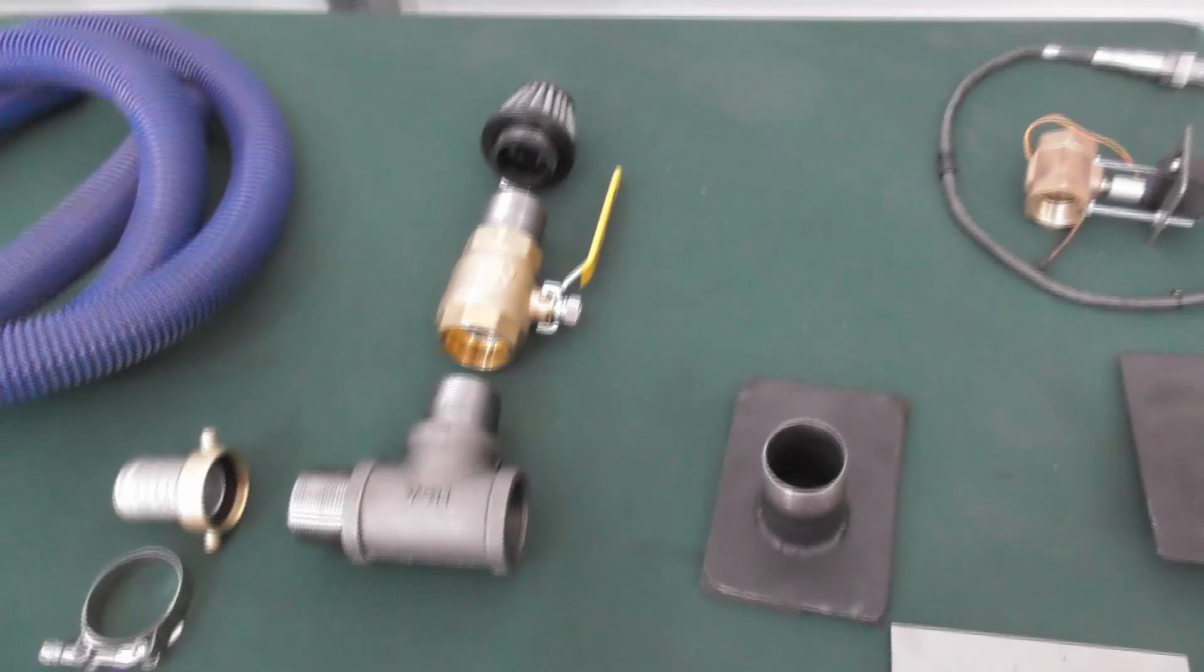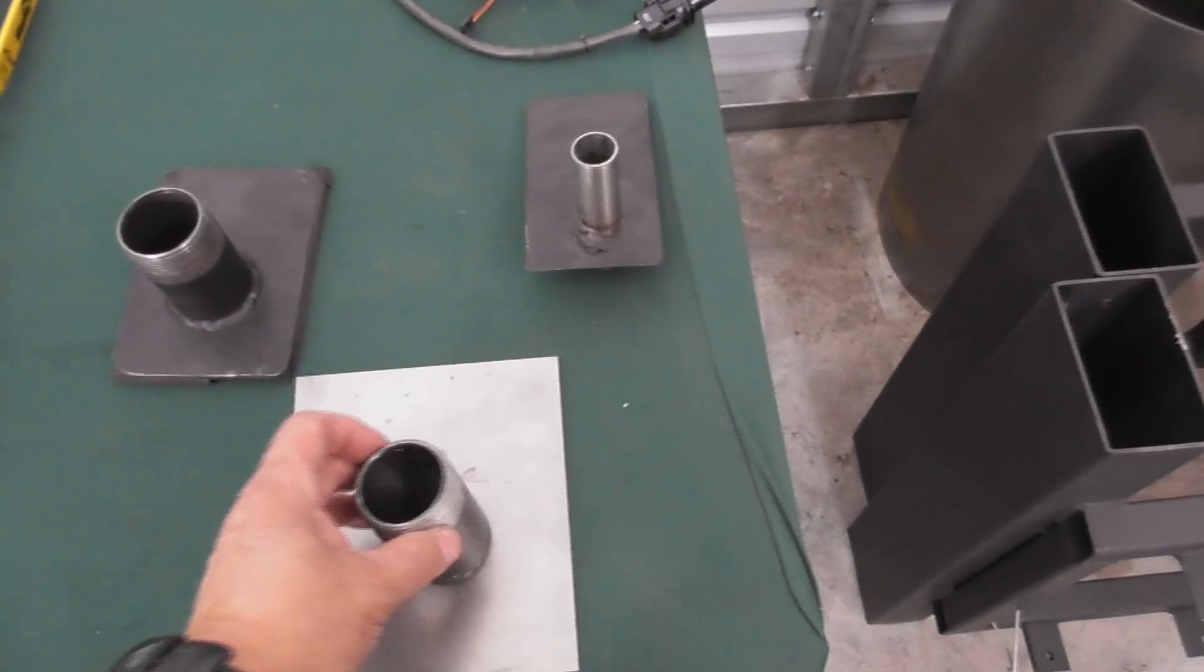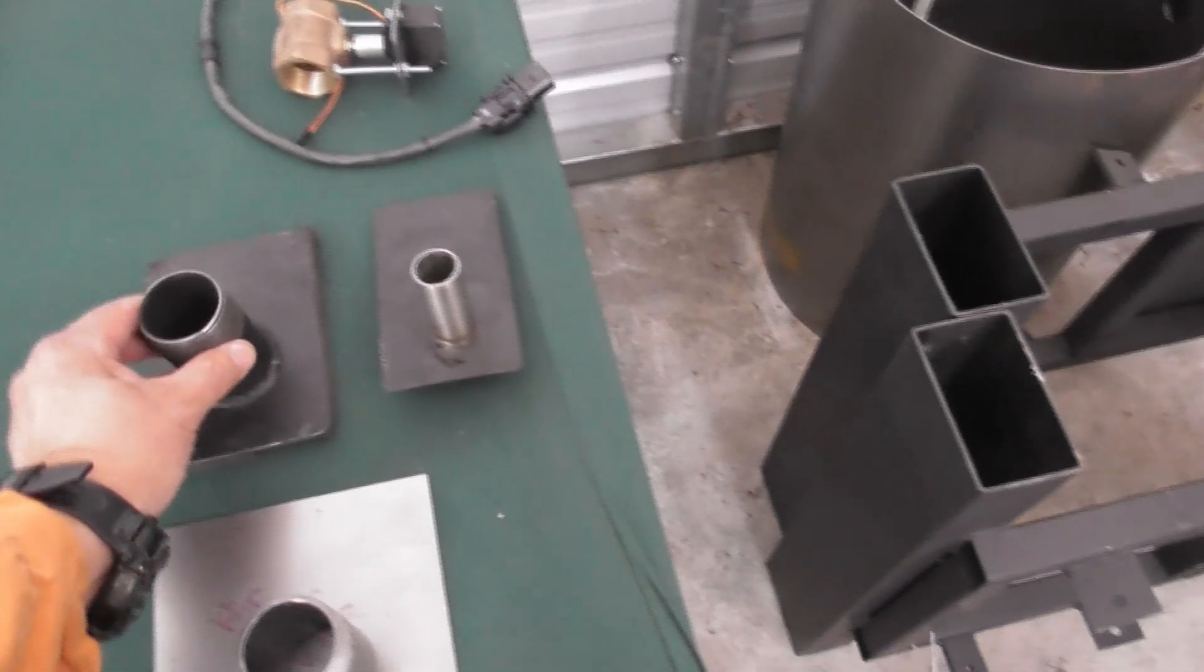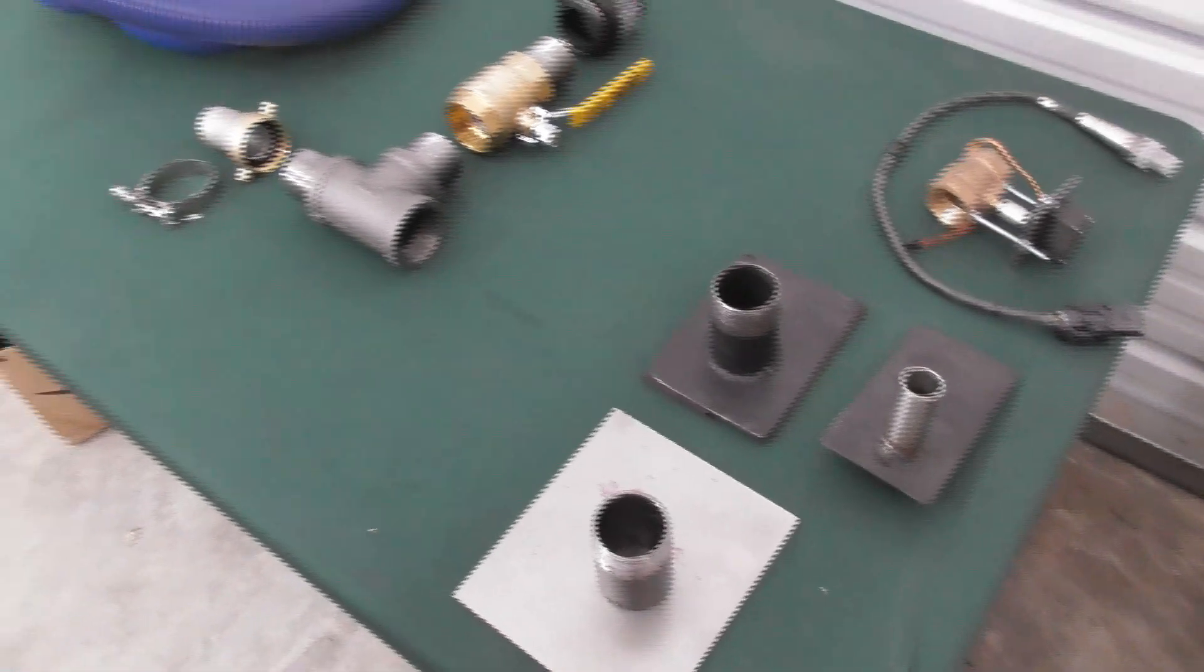Since we don't know what kind of generator you're going to be running, we ship it with a plate, half nipple, and then a piece of rubber gasket so that you can make up your own adapter plate based on whatever size engine you're going to be running.